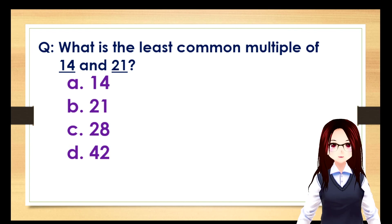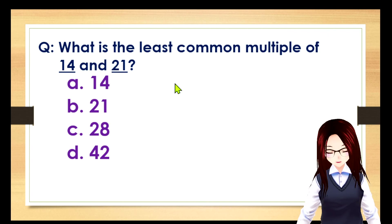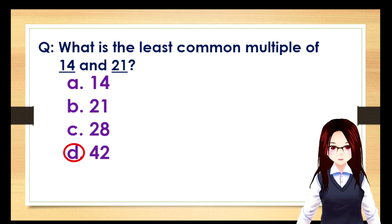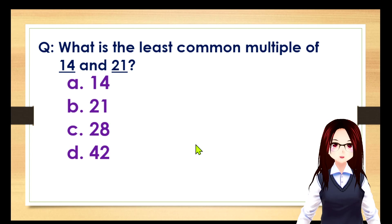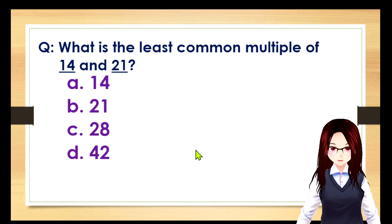Next: what is the least common multiple of 14 and 21? The correct answer is letter D: 42.